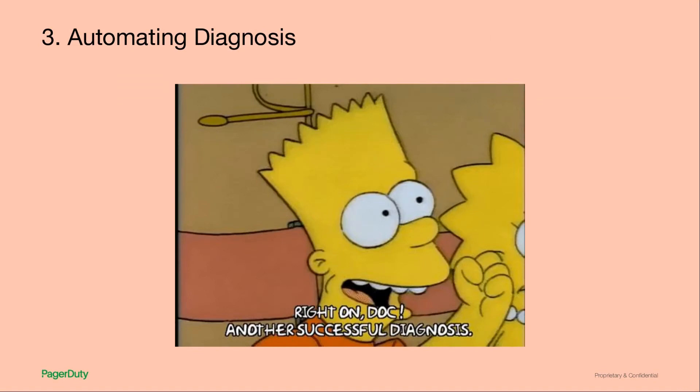The next thing I'm going to talk about is automating diagnosis. Assuming you have an incident, if you can automate some of your diagnosis, you can get to fixing it faster. There are plenty of tools out there that talk about determining root cause — the exact line of code that's a problem — but typically this is a bit of a pipe dream. It's really hard to do. But short of that perfect determination of cause, there are things you can do to speed up the diagnosis and make it a lot easier for responders.